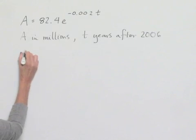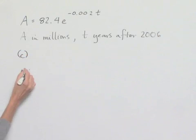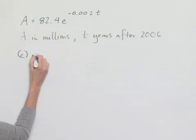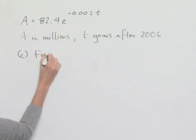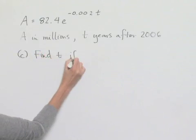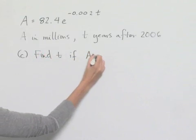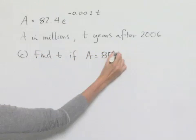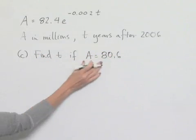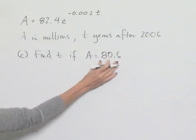In Part C, we're asked to determine in which year the population of Germany will be 80.6 million. That means we want to find t if A equals 80.6. So, we're going to replace A in our formula with this given value.